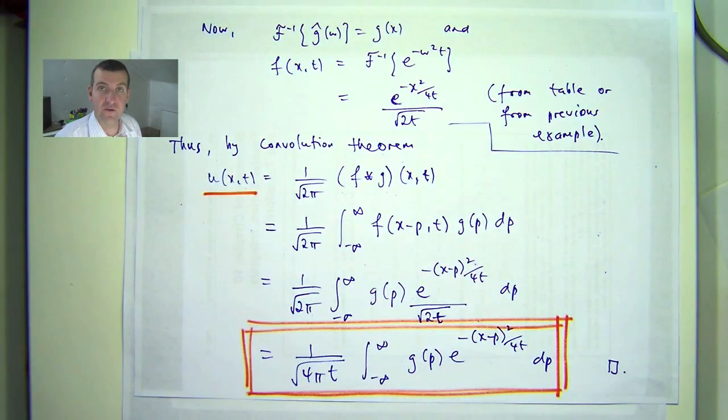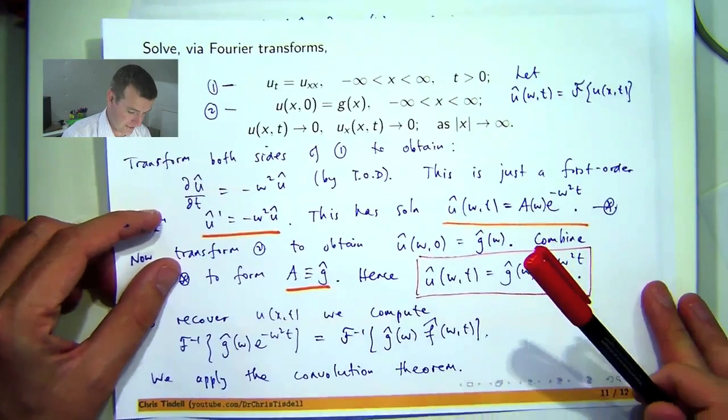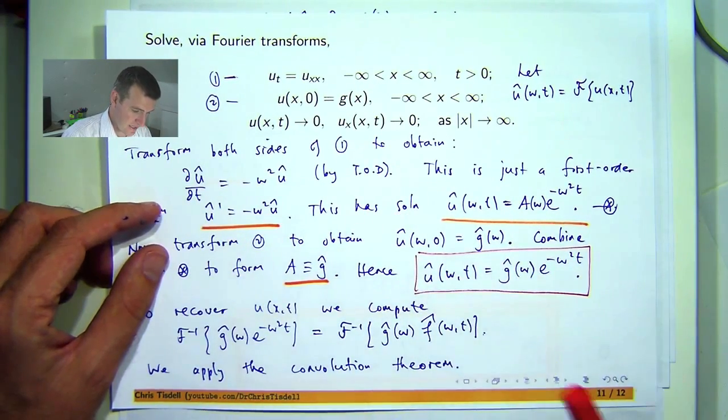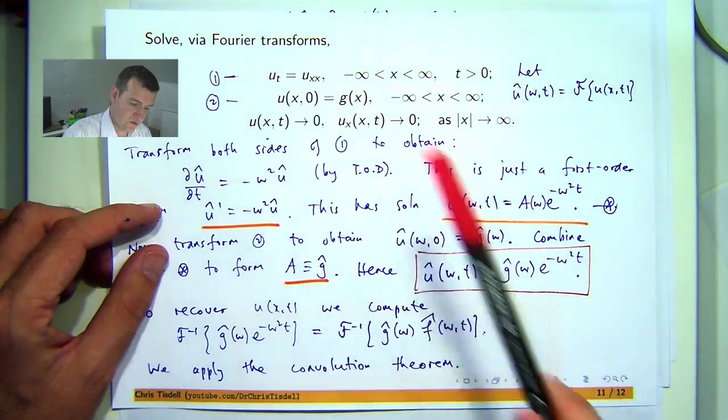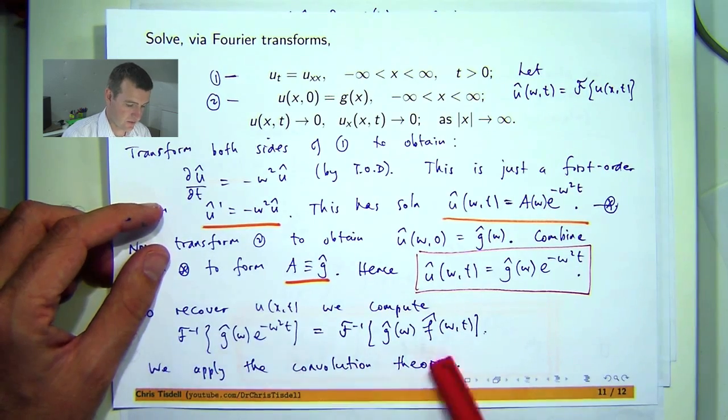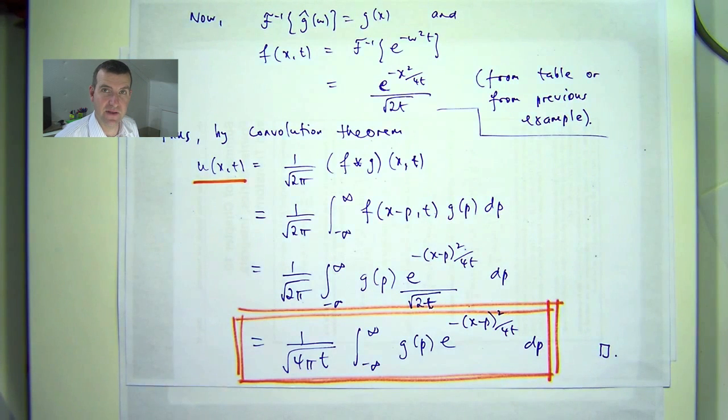So that is the transform method for solving the heat or diffusion equation. Again, like I said before, the transform methods for differential equations are usually the same. You take the problem and you transform it. You form a new, hopefully simpler or solvable problem. You solve that problem and you refine it and then you get back to your original solution by inverting this transform. And to do this we use the convolution theorem. And we did a little bit of work there. So that is the method of Fourier transforms to PDEs. In other videos I'm going to solve some more similar problems via the transform methods. I hope you can join me for those presentations.